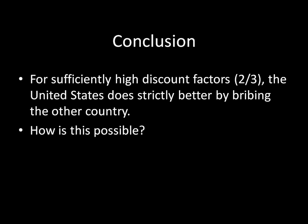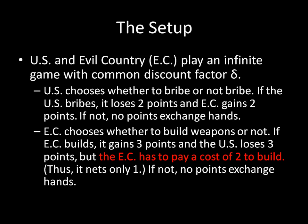Thus we can conclude that for a sufficiently high discount factor — anything greater than two over three — the United States does strictly better by bribing the country. If you think of international aid not as benevolence but rather as bribery, you should actually be supporting this, because the United States is doing better by bribing the other country even though the other country is evil. The trick is that the evil country has to pay a cost of two to build, and the United States is essentially bribing the evil country not to pay this cost, keeping some of the benefits to itself. So you should be supporting bribery in these circumstances even if you're selfish. Hope you enjoyed the presentation. Have a good night.